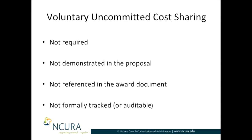The third general type of cost sharing is voluntary uncommitted cost sharing. It is not required, not demonstrated in the proposal, and not referenced in the award document, because it wasn't required or demonstrated in the proposal or any just-in-time or revised budget stage leading up to the issuance of the award document. It is also not formally tracked or auditable.